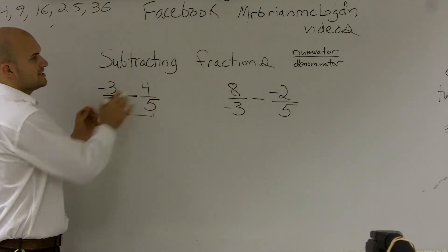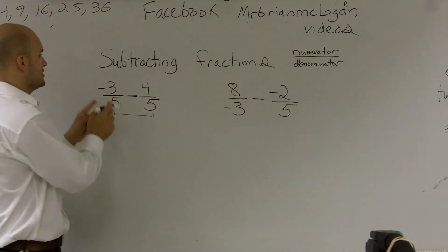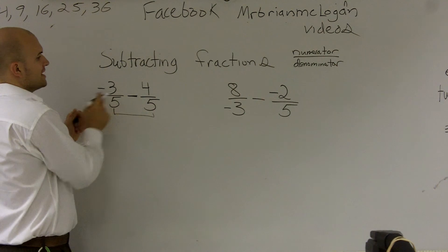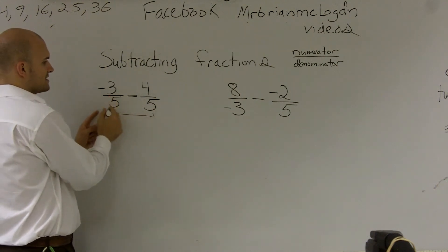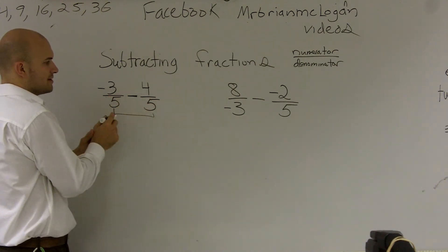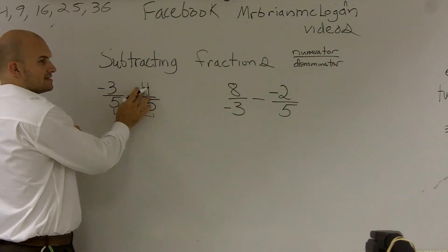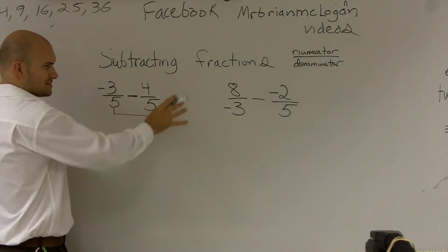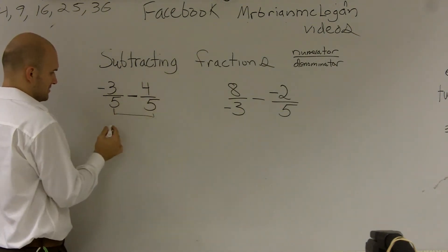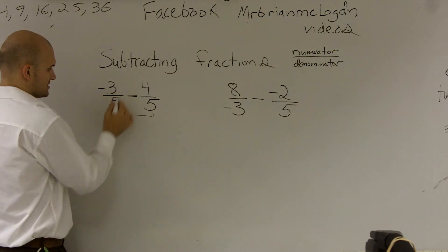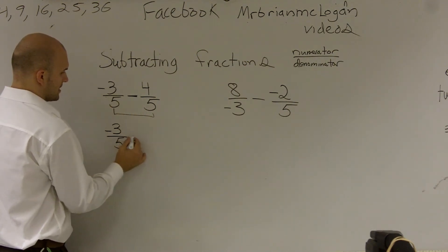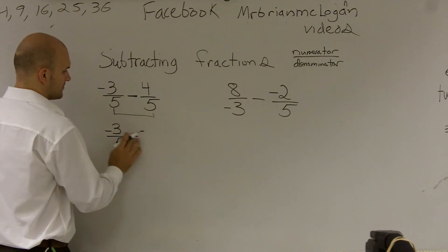So you're only going to be dealing with your numerators. When I do negative three-fifths minus four-fifths, I have a positive five on the bottom and a positive five on the bottom here. So I'm going to want to keep this as a negative four up top here. I'll explain a little bit more. If I do negative three-fifths minus four-fifths...